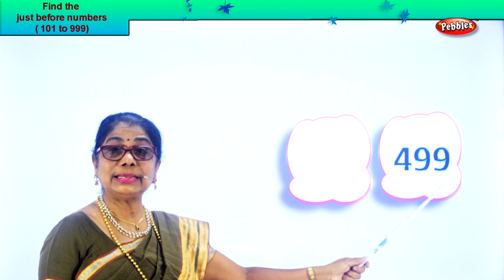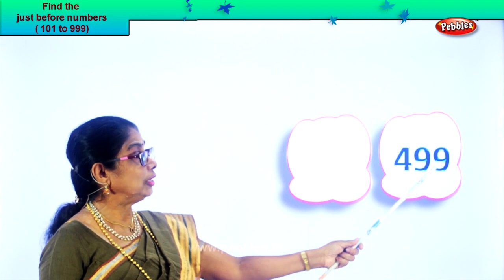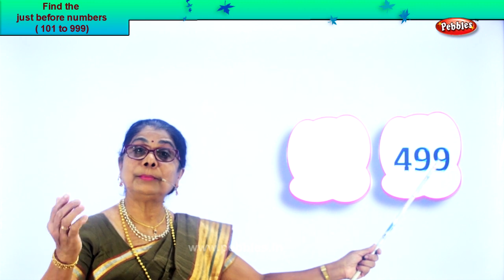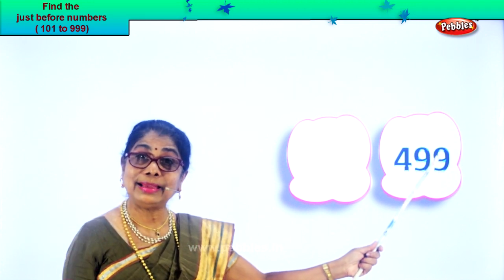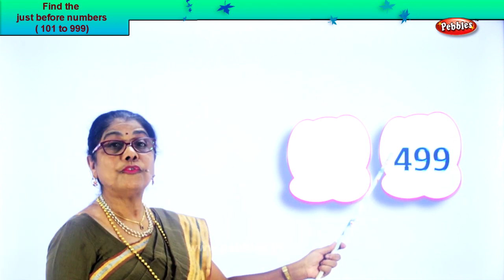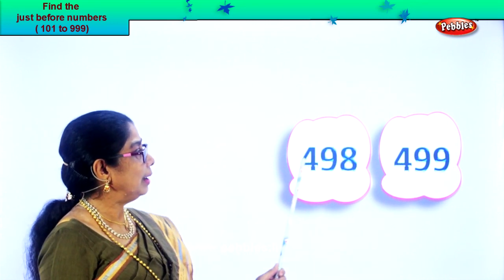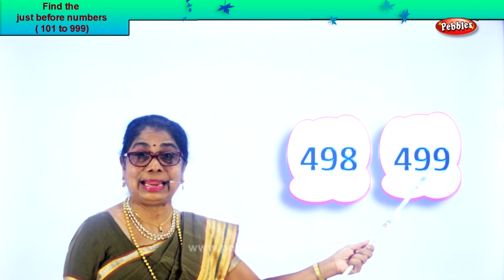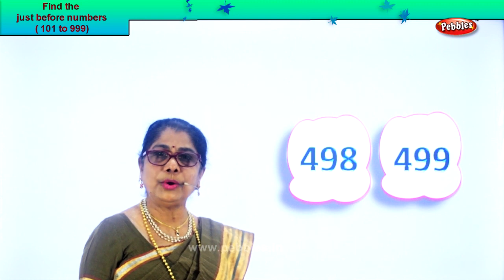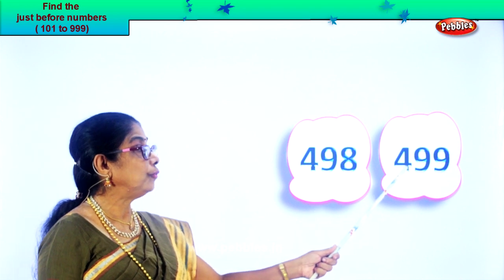Now, what number is this? Number nine. What place? Ones place. In the ones place you have nine. What will be the number before? Nine is a big number — one less than nine is eight. So then the number before can be 498. One less than 99 is 98. So we have 498, 499.